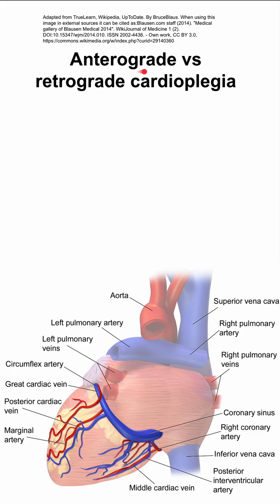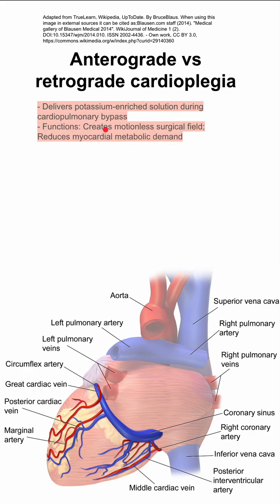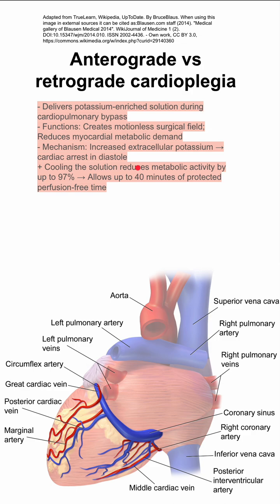Here are some notes on anterograde and retrograde cardioplegia. Cardioplegia is when you deliver a potassium-enriched solution during cardiopulmonary bypass. It creates a motionless surgical field and reduces myocardial metabolic demand. It works by increasing extracellular potassium, which causes cardiac arrest in diastole, suitable for cardiac surgeries. You can also cool the solution to reduce metabolic activity by up to 97%, allowing for 40 minutes of protected perfusion-free time.